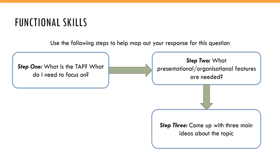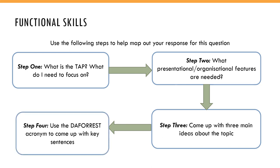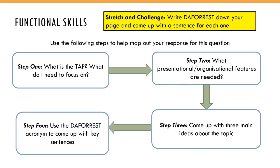Step three: come up with three main ideas about the topic. Generally speaking, we shouldn't produce more than about five paragraphs — maybe a little bit more if you want to stretch an idea, but five is about the most. You'll have an introduction, three main ideas, and a conclusion. Step four: use the DEFOREST acronym to come up with some key sentences. These are the main techniques we're looking for in your writing, and they help you track what techniques you've used and plan your content.